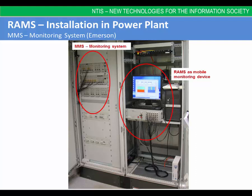This is an example of RAMS usage as a mobile device placed in the rack of the MMS monitoring system from Emerson. The RAMS is installed either as a mobile device connected to the buffered outputs from the turbine monitoring system, or as a part of the monitoring system rack.